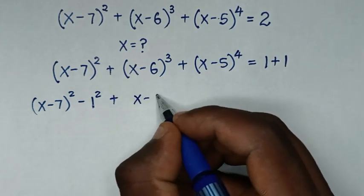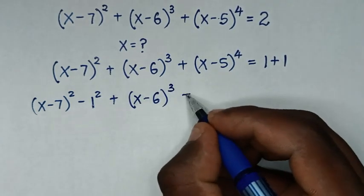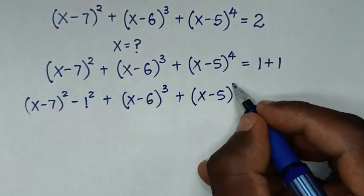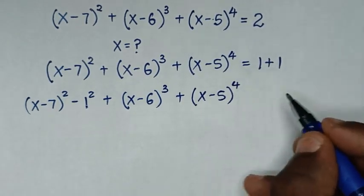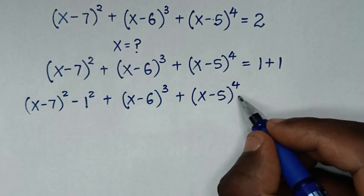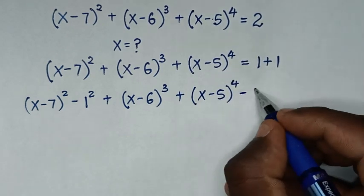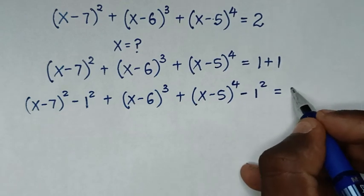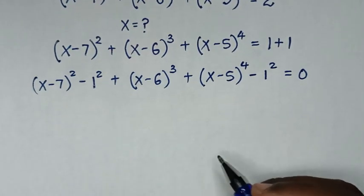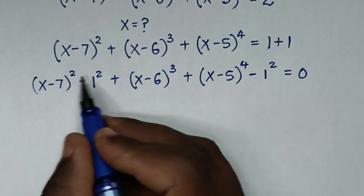Then plus (x minus 6) cubed, plus (x minus 5) to the power 4. We take this 1 to the left side as well. To set up a difference of two squares, minus 1 is the same as 1 squared, then equals 0. In the next step, we have expressions in the form of a difference of two squares.